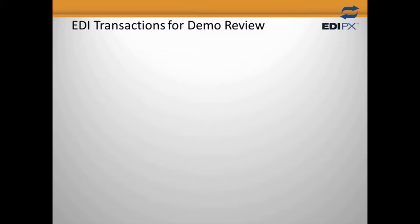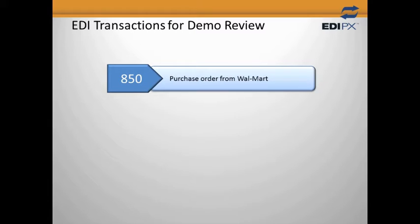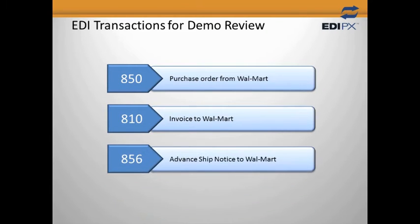To help keep this demo concise, let's look at a few transaction types. EDI-PX 850 is a purchase order from Walmart to you. 810 is your invoice back to Walmart for the merchandise they are buying. 856 — the Advance Ship Notice, or ASN for short — is a special document that tells Walmart when, where, and how they can expect their merchandise to be shipped. Remember, this is a small sample of the types of transactions that EDI-PX supports.